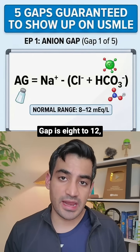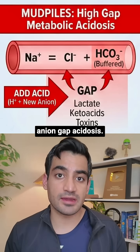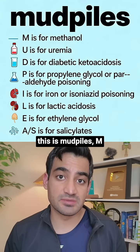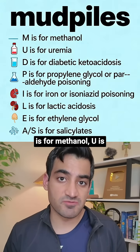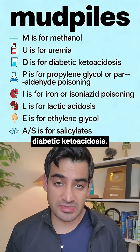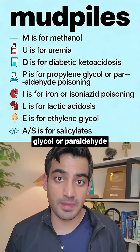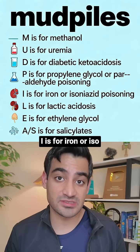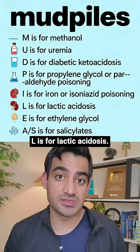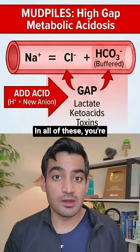The normal anion gap is 8 to 12, and if it is more than 12, we call it high anion gap acidosis. The mnemonic for this is MUD PILES: M is for methanol, U is for uremia, D is for diabetic ketoacidosis, P is for propylene glycol or paraldehyde poisoning, I is for iron or isoniazid poisoning, L is for lactic acidosis, E is for ethylene glycol, and S is for salicylates.